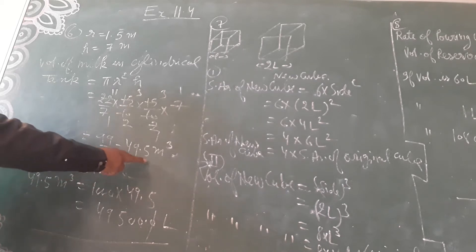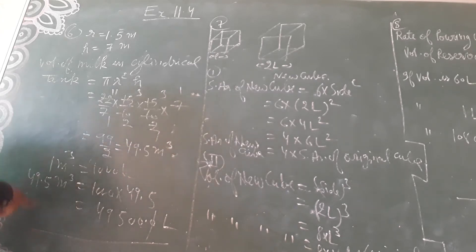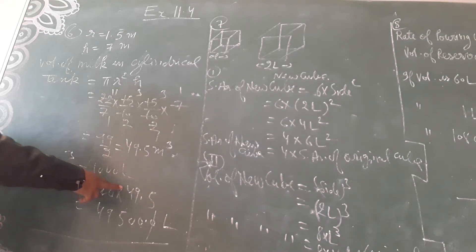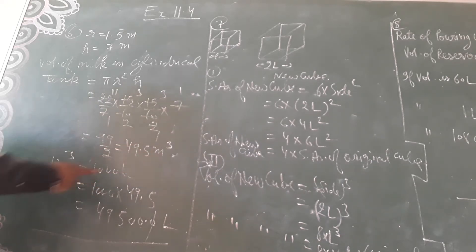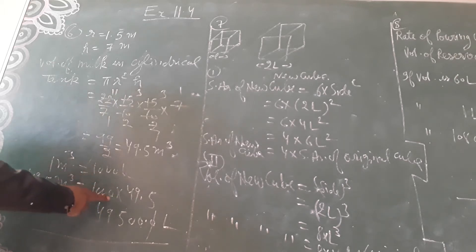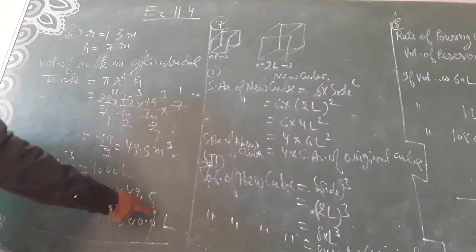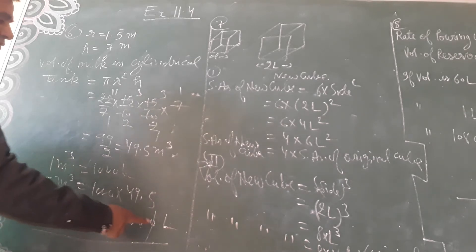Converting the decimal: 99/2 = 49.5 cubic meters. For 1 cubic meter there are 1,000 liters, so 49.5 cubic meters multiplied by 1,000 gives 49,500. Multiply 495 by triple zero.